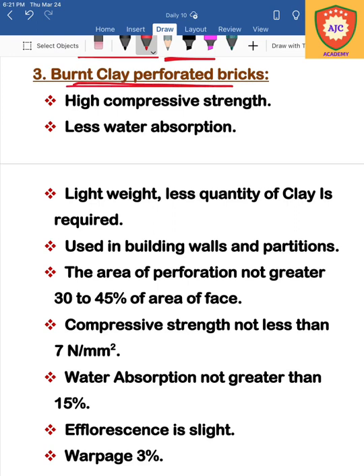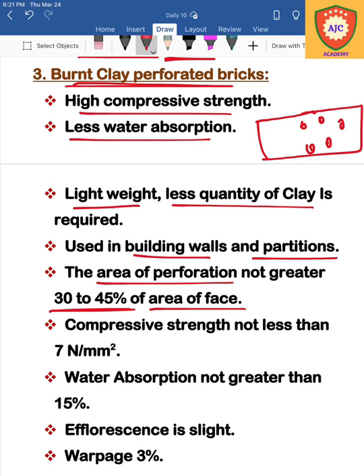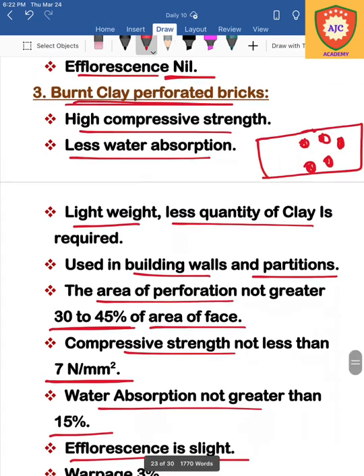The next type is burnt clay perforated bricks. Perforated bricks have holes through them. The area of perforation is 30–40%. This brick has high strength, low water absorption, and low weight due to less clay used. They are used for building walls and partition walls. Compressive strength is 7 N/mm², water absorption is 15%, efflorescence is slight, and warpage is 3%.